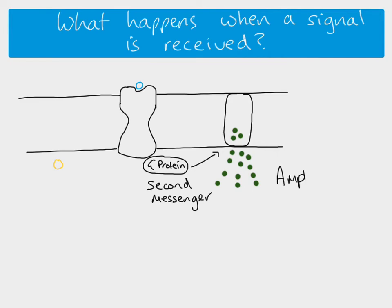We call this amplification. The original signal, that original one signaling molecule, has been amplified so that we now have a large number of second messengers.